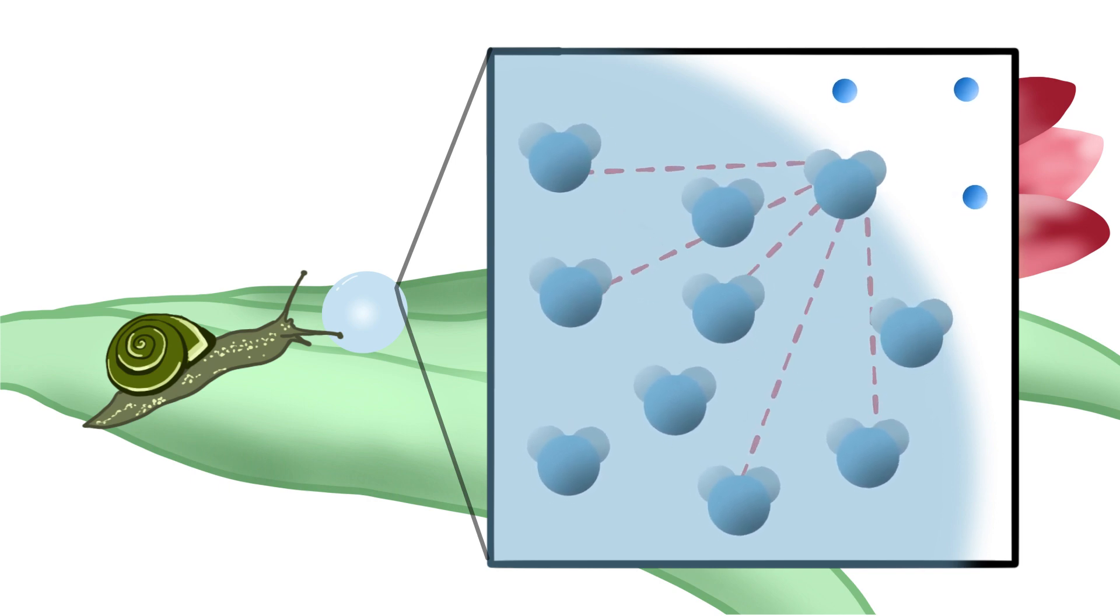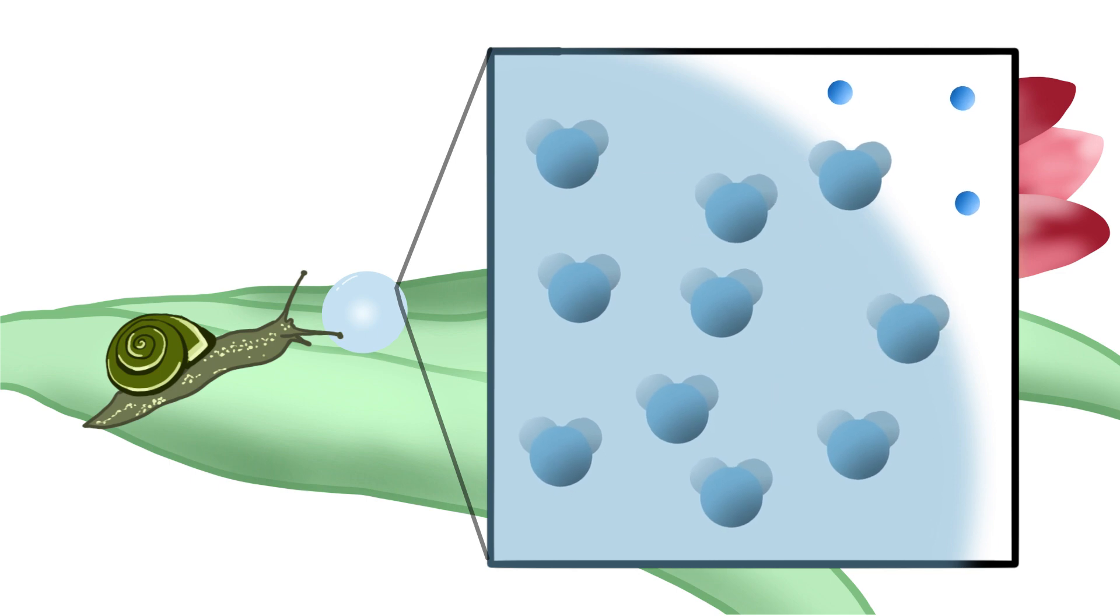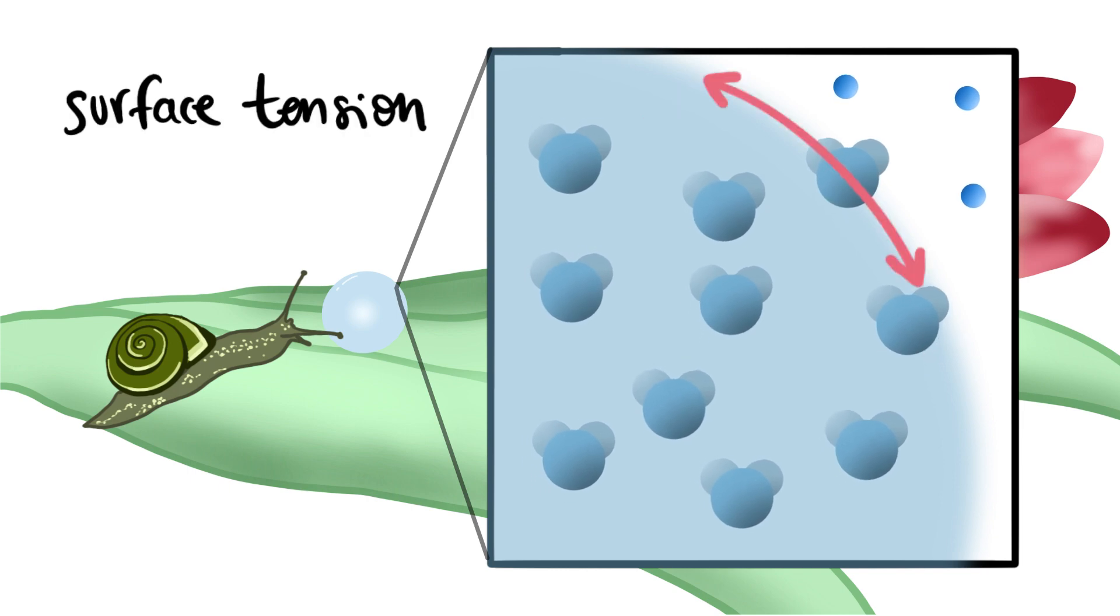A molecule in the water's surface, however, loses half of its bonds because it cannot interact that strongly with the air or the leaf molecules. As a result, the surface molecule feels a force that pulls it inwards. The combination of all these forces creates what's called surface tension, which tends to minimize the surface of the liquid by forming spherical droplets.